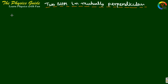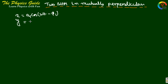Let two simple harmonic motions be mutually perpendicular. Their superposition gives a resultant. Let one oscillation be along the x-axis: x = a1·cos(ωt - φ1), and another along the y-axis: y = a2·cos(ωt - φ2).